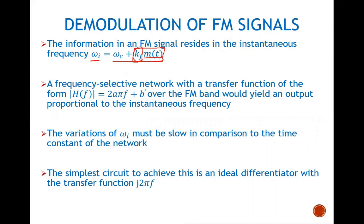If we use a frequency-selective network that has a transfer function of this form — where the transfer function is equal to 2A*pi, with constant terms depending upon the circuit parameters, f is the frequency of the input signal, and B is another constant representing a straight-line relationship between frequency and the output — then over the FM band, the output would be proportional to the instantaneous frequency. With this sort of transfer function, we can use it to demodulate an FM signal.